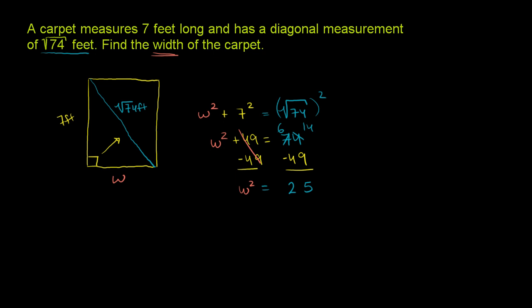So W is going to be equal to the square root of 25, the positive square root. So let's take the square root of both sides, the positive square root, and we will get W is equal to 5. Because obviously we don't want it to be negative 5. That wouldn't be a realistic distance. So the width of the carpet is 5 feet. And we're done.